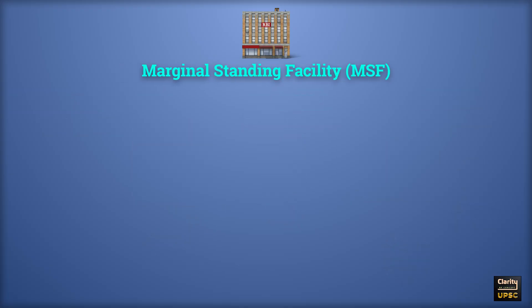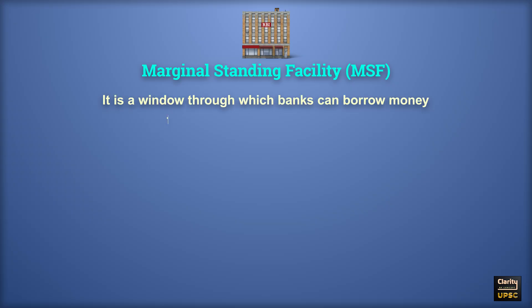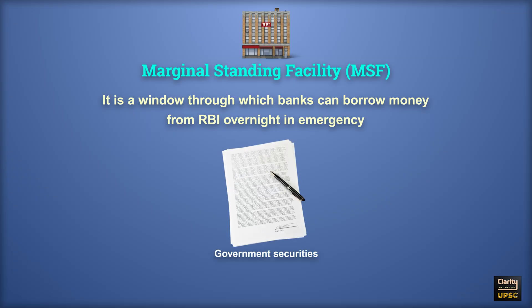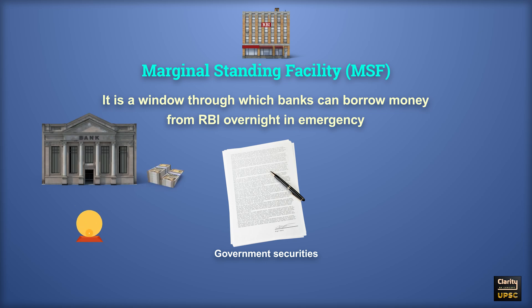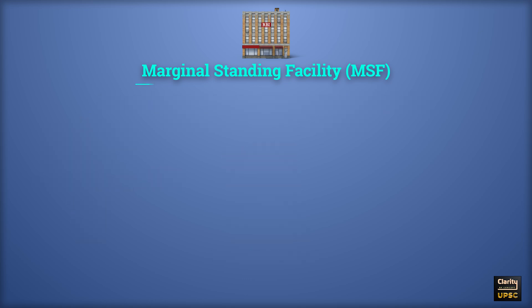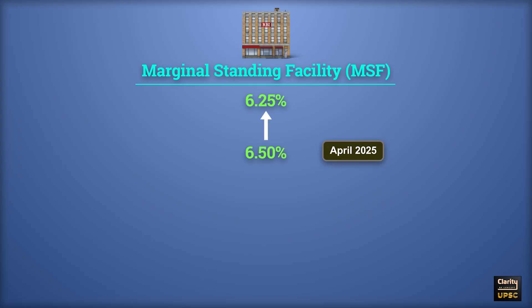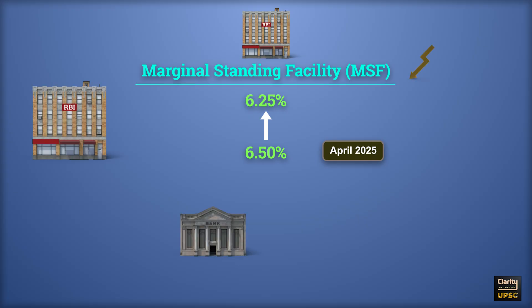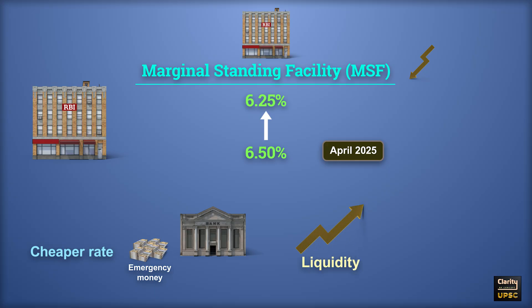Next is Marginal Standing Facility or MSF. It is a window through which banks can borrow money from RBI overnight in emergency, giving government securities as guarantee. This facility is used when banks face a shortage of money at end of day. The MSF rate is 6.25% now, reduced from 6.5% in April 2025. If the MSF rate is reduced, banks can borrow emergency money at a cheaper rate, increasing liquidity, which can boost growth but also add to inflation.